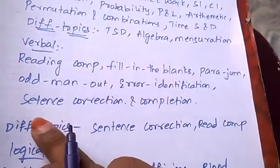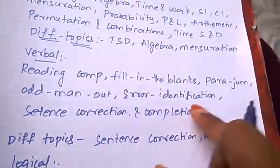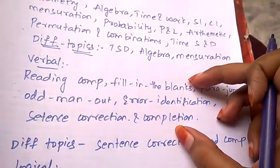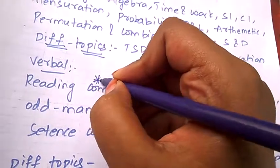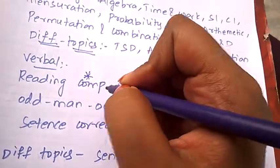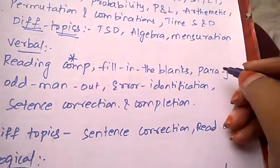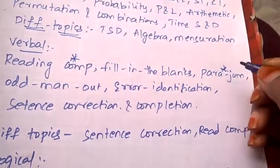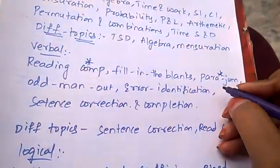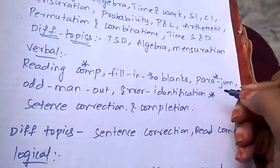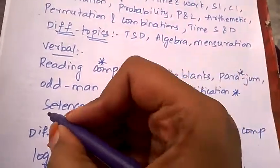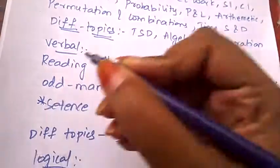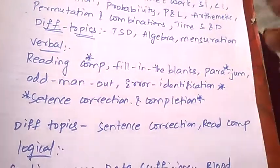Out of these all topics, time-consuming are reading comprehension like it will consume a lot of time and para jumbles you need to practice more. Error identification you should have the concept and the knowledge of grammar, English grammar. Even for sentence correction and completion you should have the knowledge of grammar. So you need to concentrate and practice more on verbal for CAT.